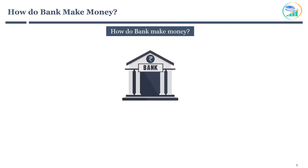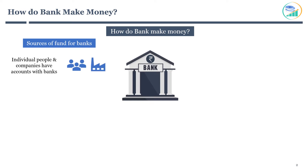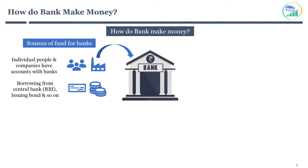First, let's understand the sources of funds for banks. Individual people and companies have accounts with banks and deposit money in different types of accounts. Typically, it includes current accounts, savings accounts, fixed deposits, and so on. This is one of the sources of money for banks. There are several other sources, like borrowing from the central bank — that is, RBI — and issuing bonds, and so on.